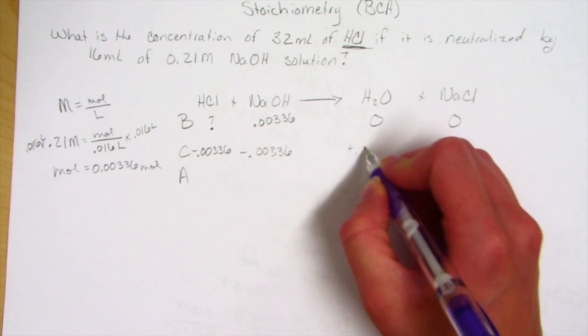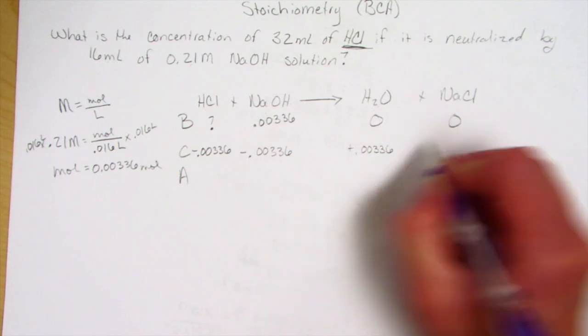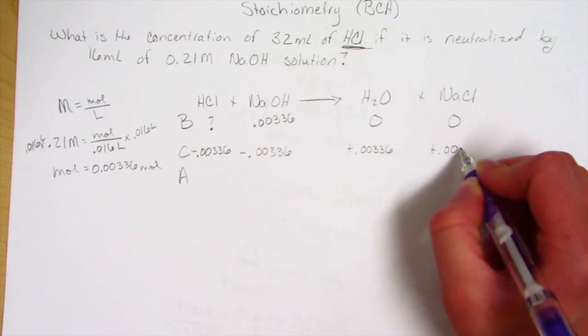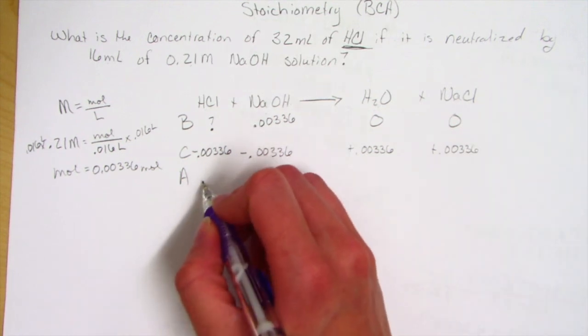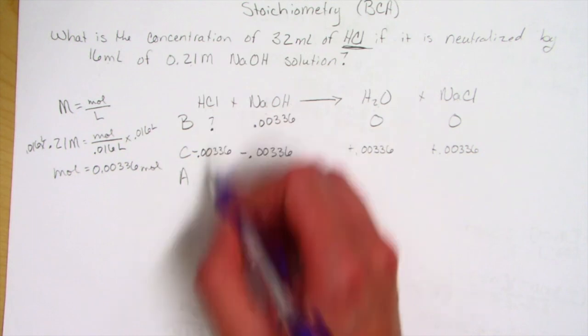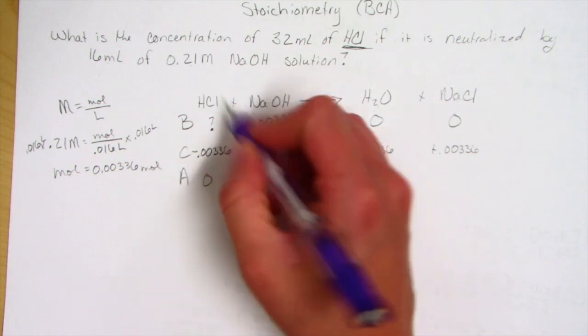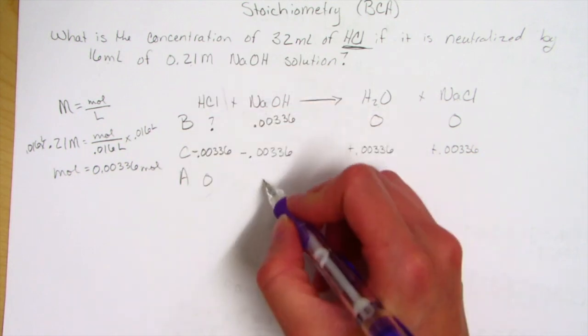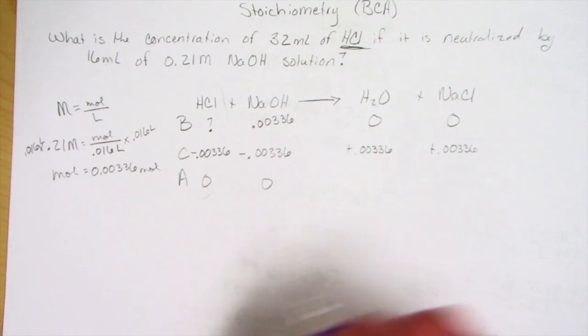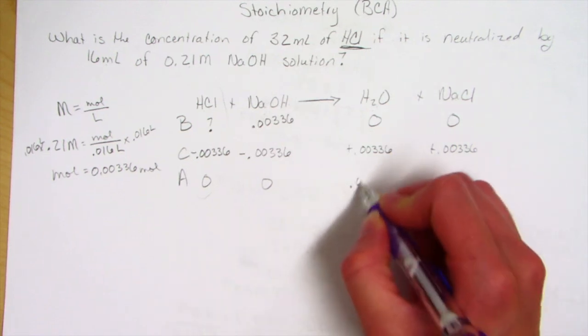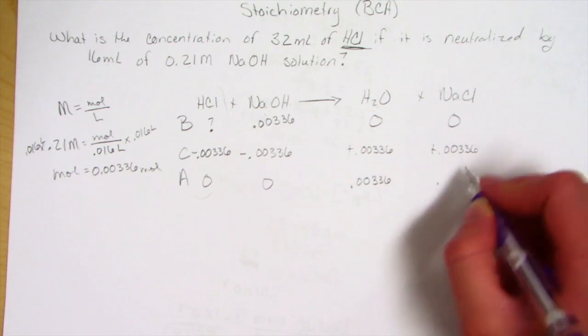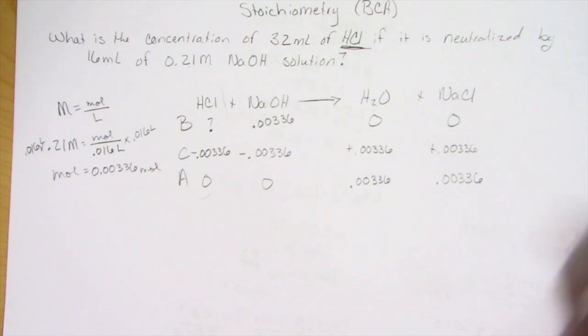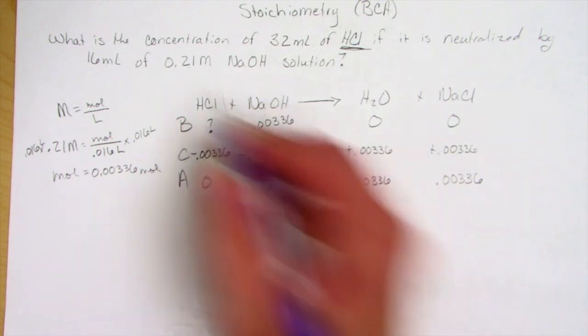We're also going to make the same amount of water and the same amount of NaCl. So we're left with nothing because we're using up all of this HCl. We have nothing left of our NaOH, and we have 0.00336 of our NaCl.